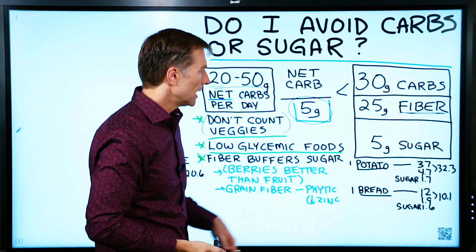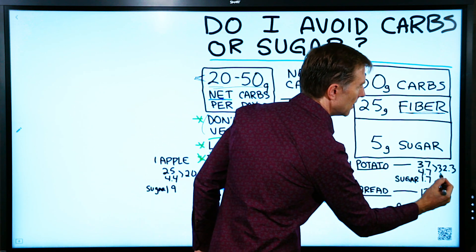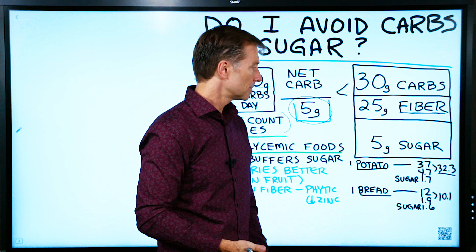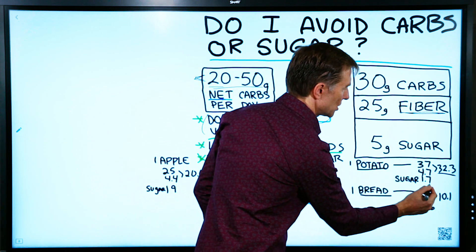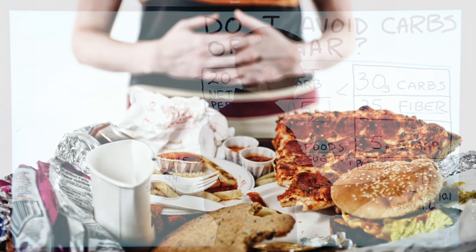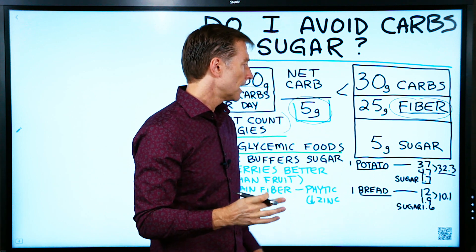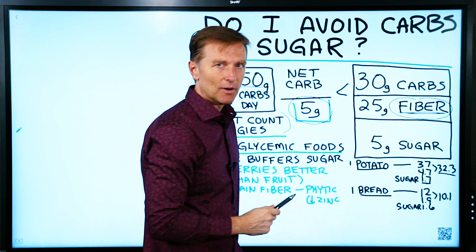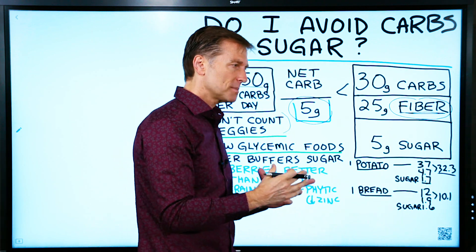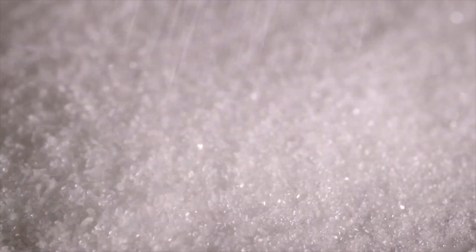Let's take one potato as an example. It has 37 grams of carbs but 4.7 grams of fiber, giving us a net of 32.3 carbs — pretty high, and not a lot of fiber. However, the sugar is low. You do want to look at the sugar and use judgment, but it also depends on the fiber, the type of food, and the glycemic index. With a raw potato the sugar stays low, but as soon as you cook, fry, or bake it, the sugar goes straight up. This is why potato chips and French fries are very high on the glycemic index — those carbohydrates break down into simple sugars. That's what we're trying to avoid: foods that spike blood sugar very fast.